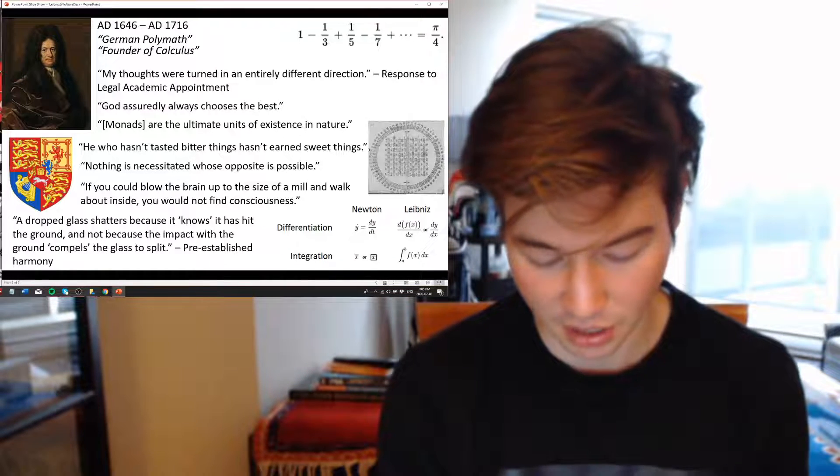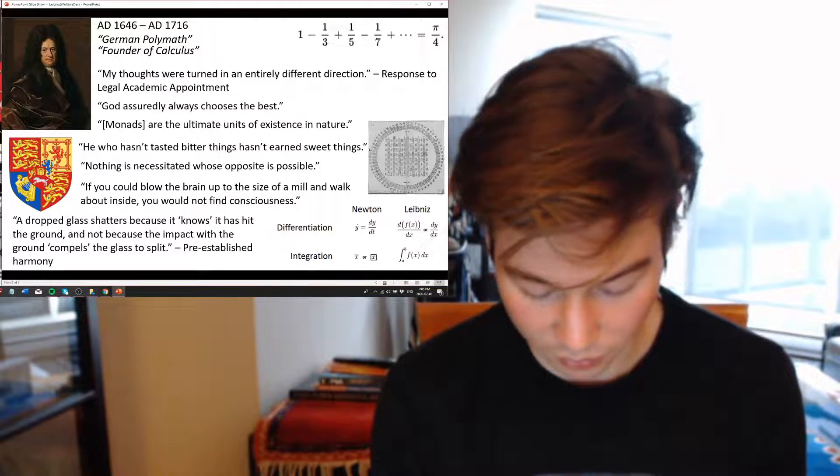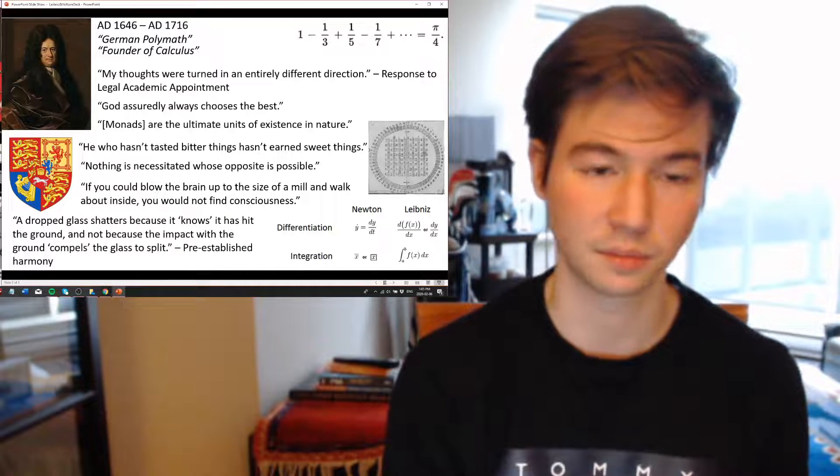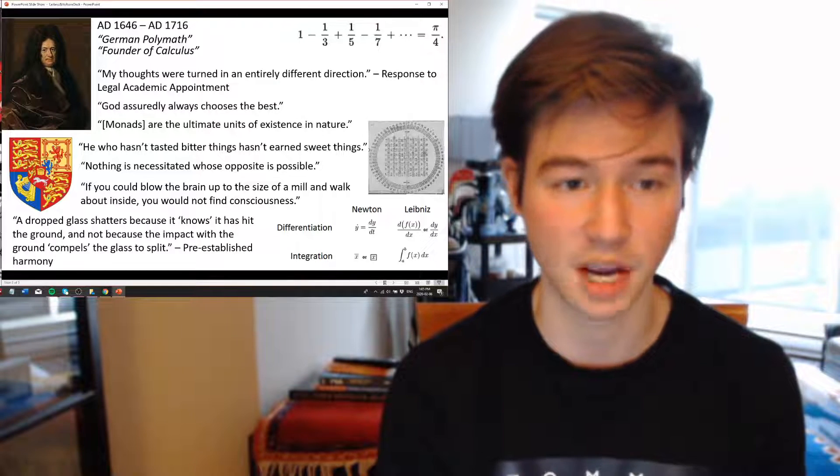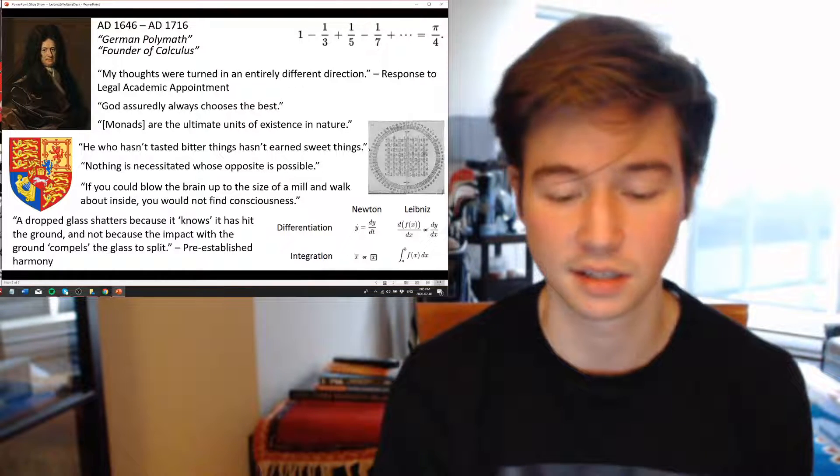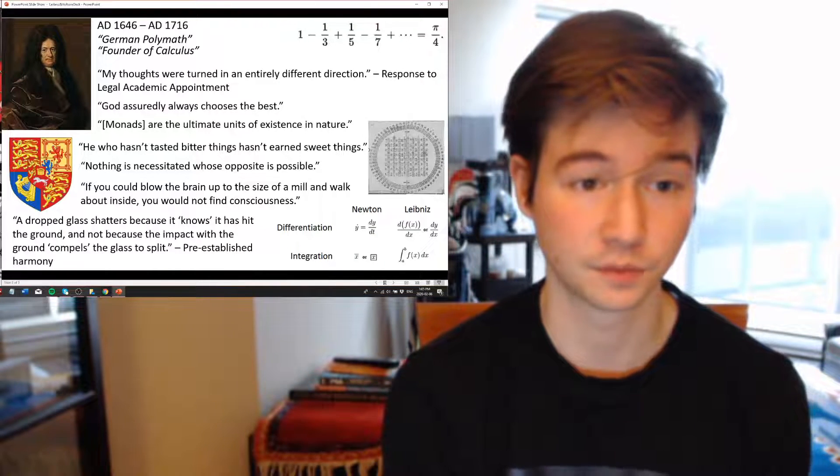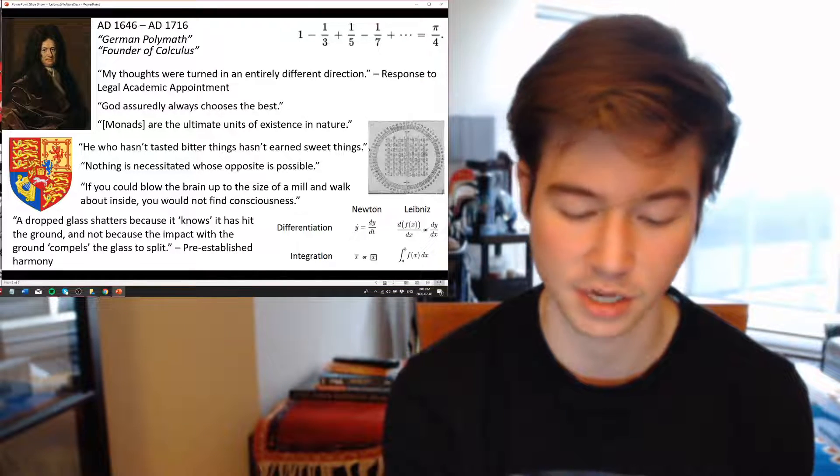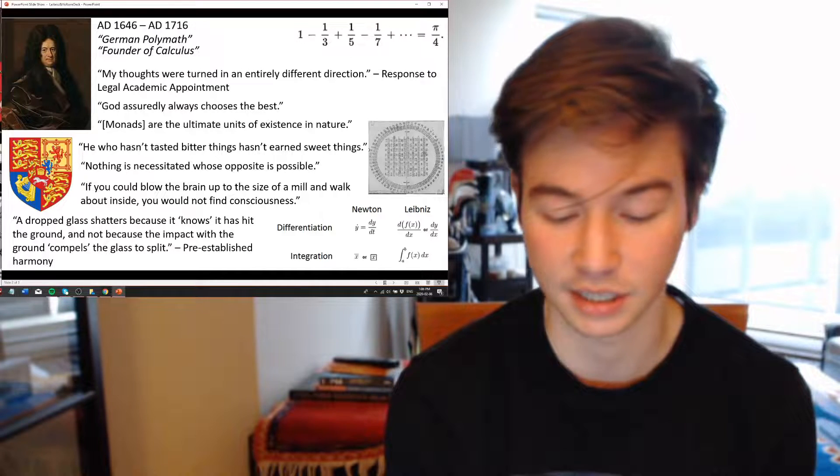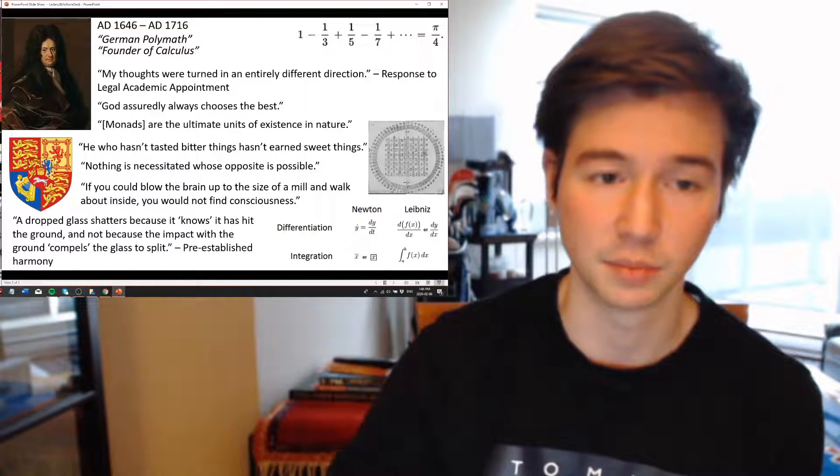He also befriended German mathematician Ehrenfried Walter von Tschirnhaus, who was very famous and more famous than Leibniz at the time, and once again influenced his fascination and facilitated his passion for mathematics. After Paris and the Franco-Dutch War broke out, the Elector sent Leibniz and his nephew on a related mission to the English government in London.